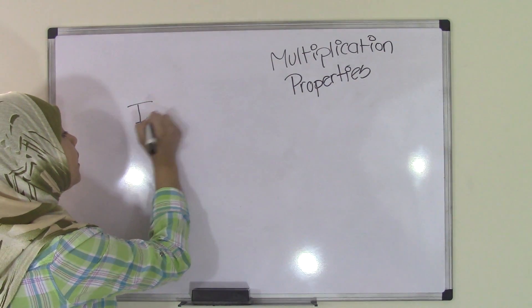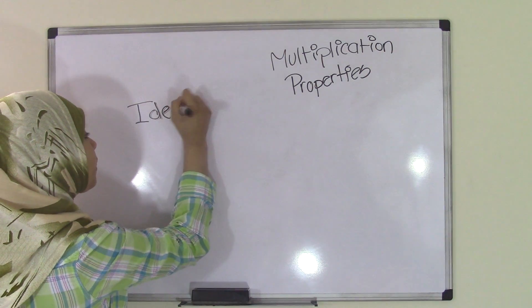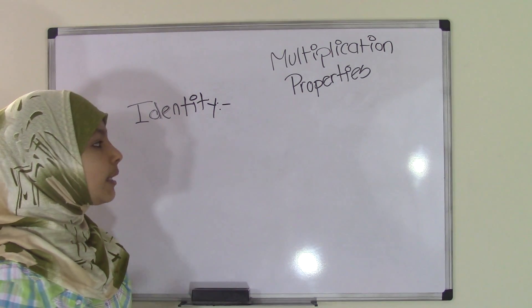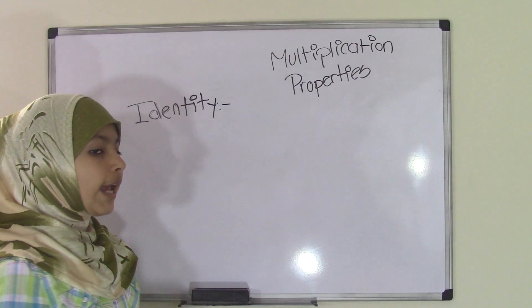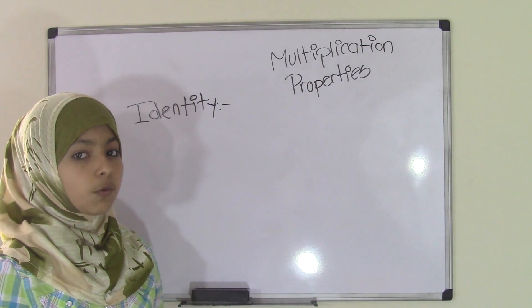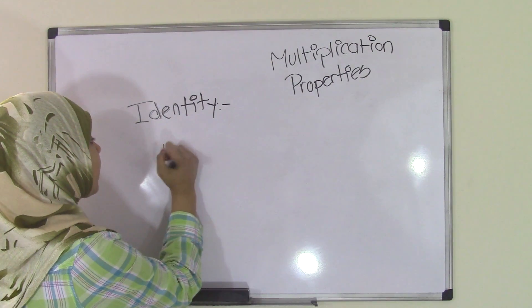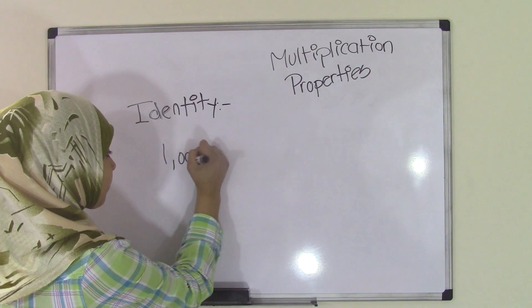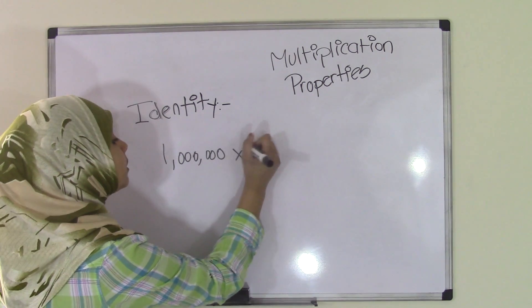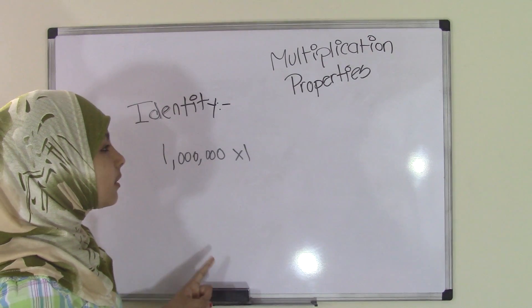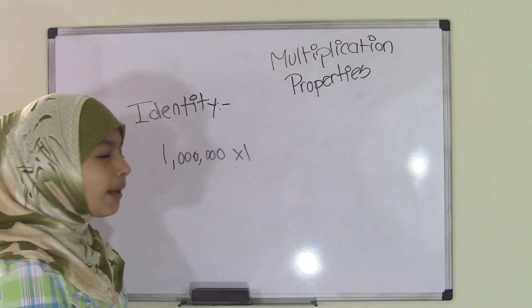The third property is identity property. The identity property has to deal with 1s because in the identity property, any number that you multiply by 1 will always equal that number. So let's say we have a big number like maybe 1 million. That's a very big number. Now we're going to multiply that by 1. The first thing that comes to my mind when I think of such big numbers is that the product has to be big. I mean it can't be smaller, right, because you're multiplying it, increasing its value.